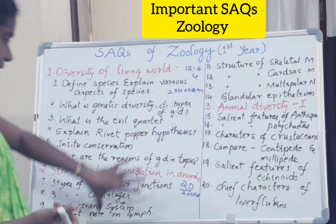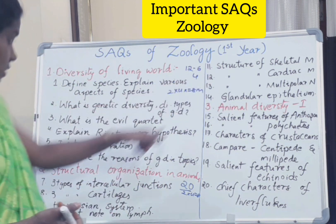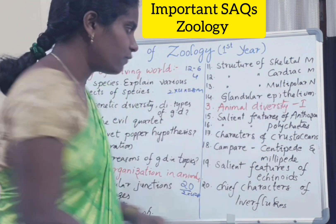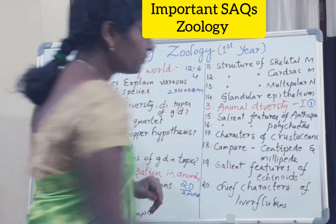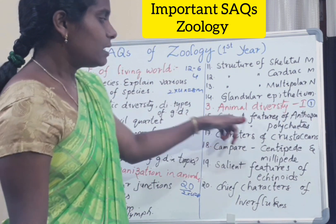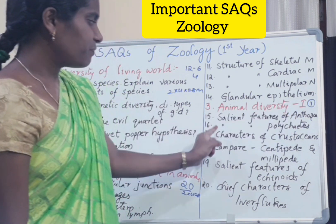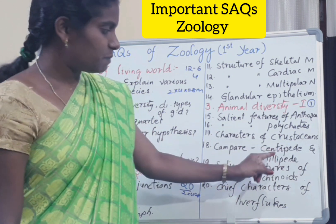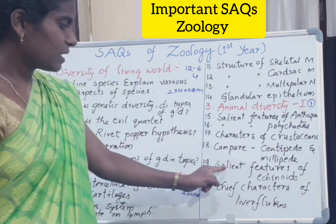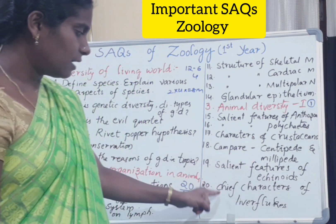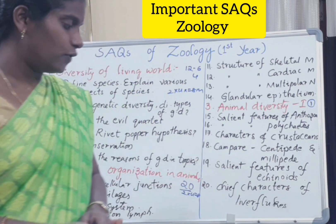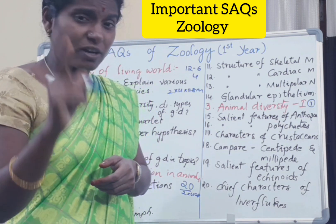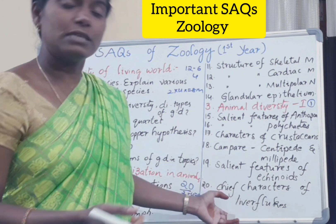That makes eight questions in the second chapter. Coming to the third chapter, Animal Diversity 1, from which only one question will be coming. Important questions from this chapter: salient features of Anthozoa, salient features of Polychaetes, Crustaceans, comparison between centipede and millipede in Arthropoda, salient features of Echinoids in Echinodermata, and chief characters of liver flukes — which belong to the class Trematoda of Platyhelminthes.